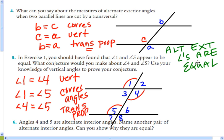It says angles four and five are alternate interior angles. Name another pair of alternate interior angles. Can you show why they're equal? I think we'll do that one in class.